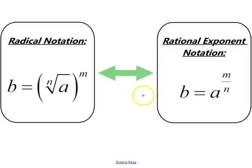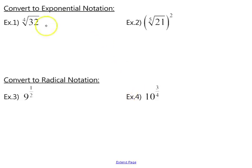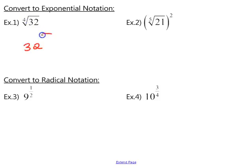We need to be comfortable converting expressions between the two different notations. We're going to take the radicand and raise it to an exponent that's a fraction. The denominator of the fraction is going to be the index and the numerator is going to be the power that the term is raised to.